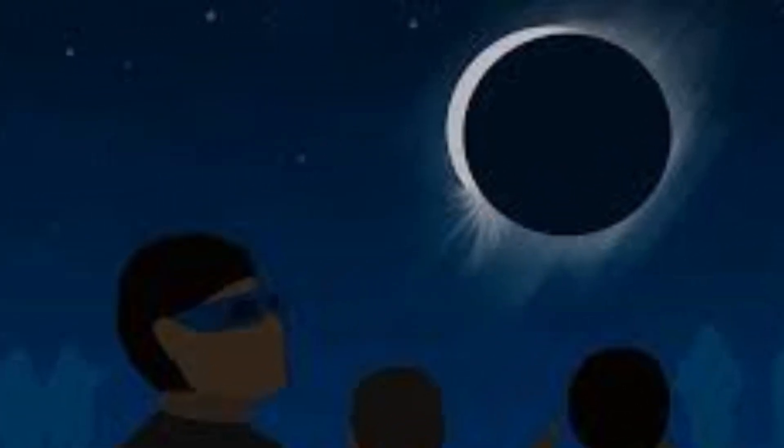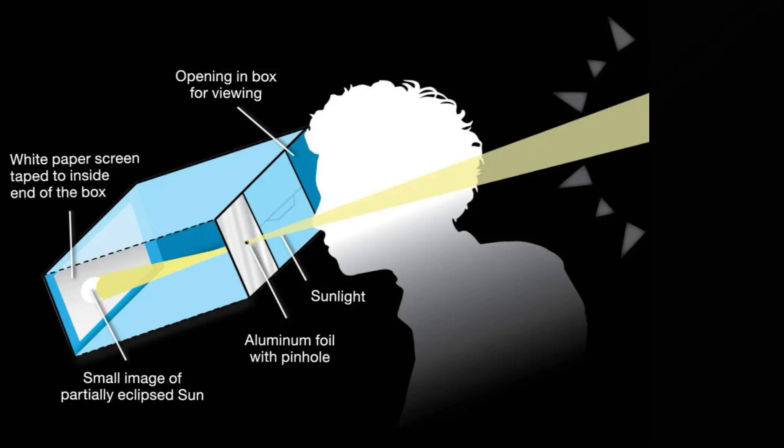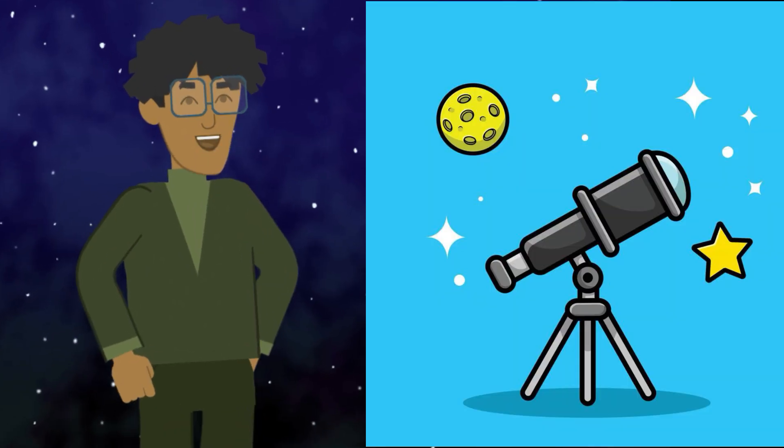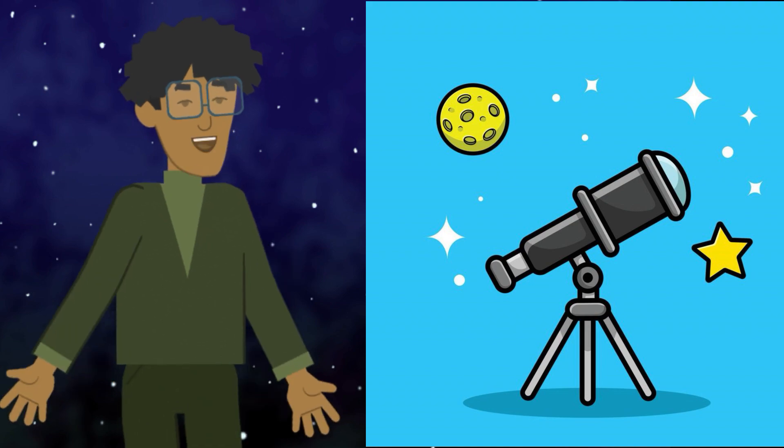Special purpose solar filters, commonly known as eclipse glasses, are designed to protect your eyes. You can also use a pinhole projector to project the image of the eclipse onto a surface. If you have a telescope, make sure it is equipped with a proper solar filter to view the eclipse safely.